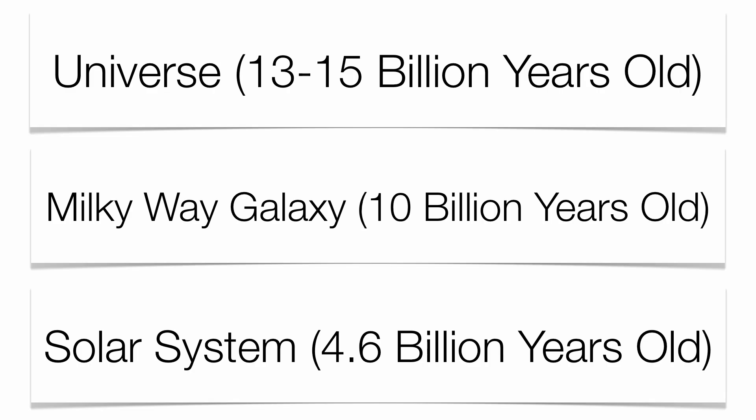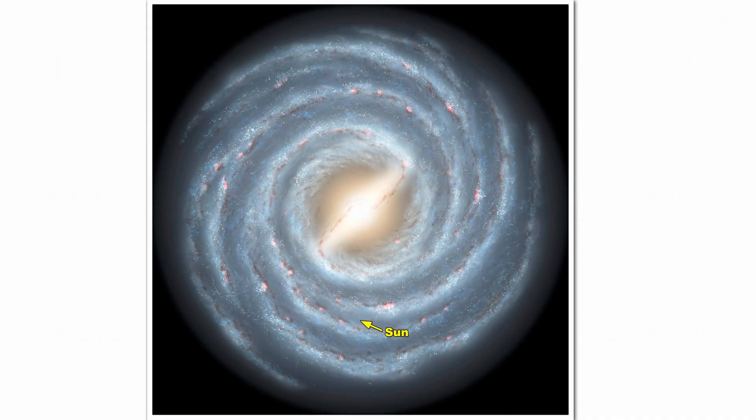So it's very important for you to understand the ages of each one of those three and also the sizes, the universe being the biggest, the solar system being the smallest. You also have to have an idea in terms of where we're found within our Milky Way galaxy. The sun and our eight planets can be found towards the end of one of the spiral arms.